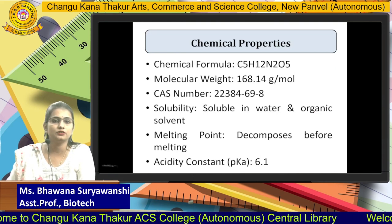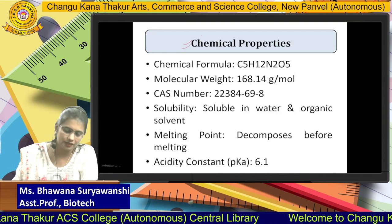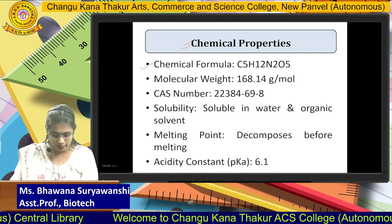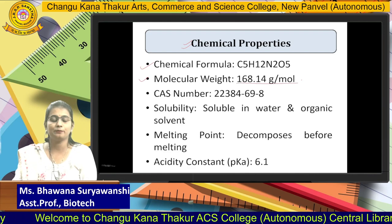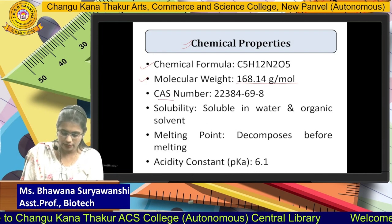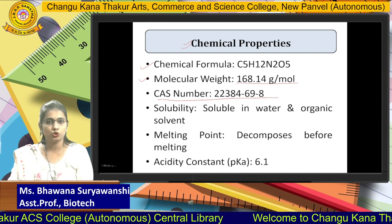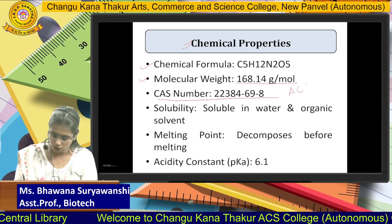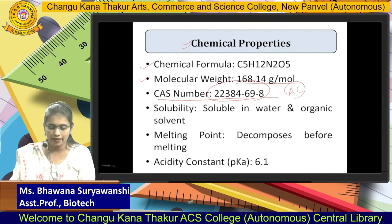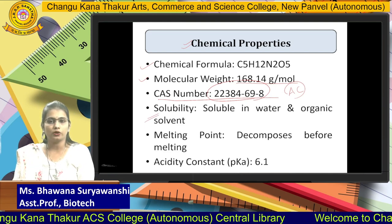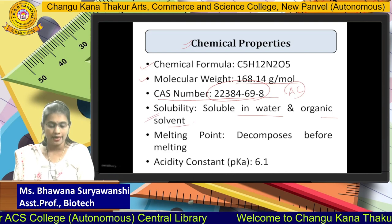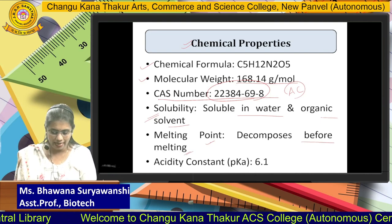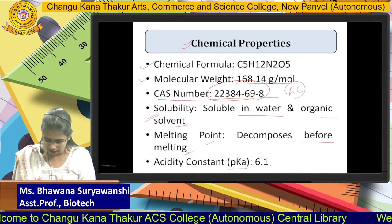Now let's look at the properties of OKG, starting with the chemical properties. You can see on screen the chemical formula of OKG is C5H12N2O5, and the molecular weight is 168.14 grams per mole. The CAS number is a unique identifier given by the American Chemical Society to every pharmaceutical product. OKG is soluble in water and organic solvents, it decomposes before reaching its melting point, and its acidity constant — the pKa value — is 6.1.